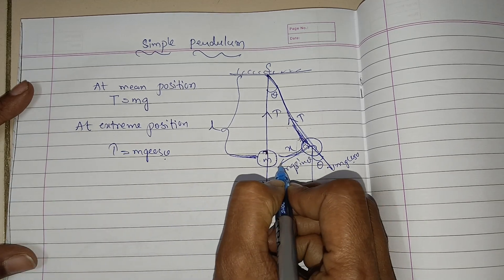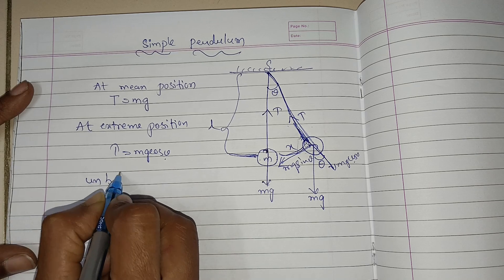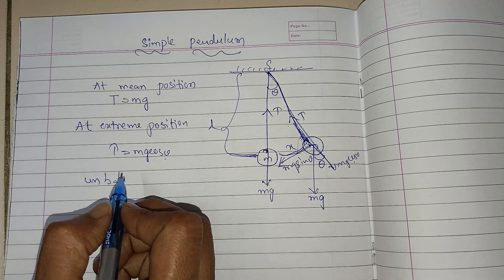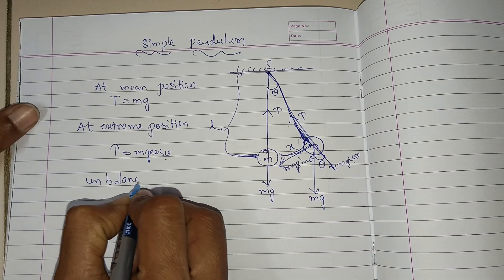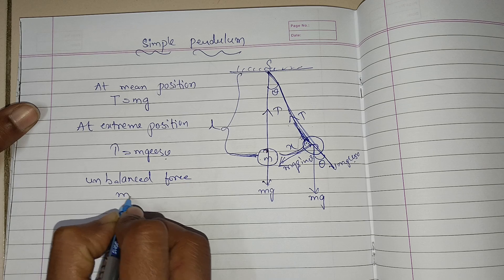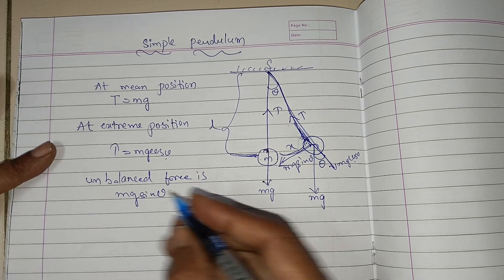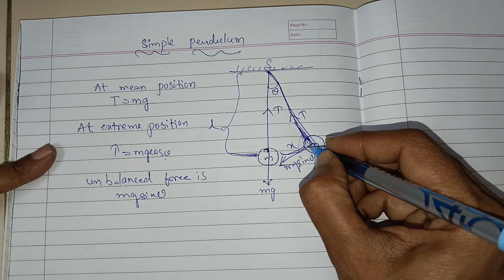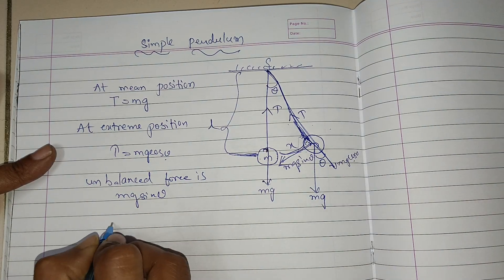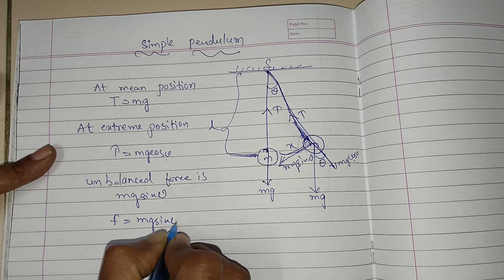There is one more force — the unbalanced force. The unbalanced force is Mg sin theta. In this direction, we have applied the force, so this unbalanced force should be balanced by M; that is equal to Mg sin theta.